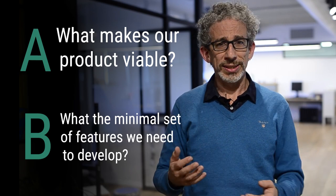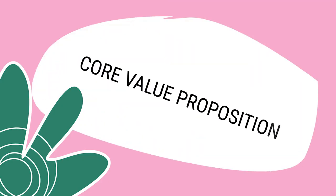Step one: core value proposition. To answer the question of what makes our product viable, we need to agree on the core value proposition of the product. We must agree on the pain we are solving and our main target audience — the people that feel this pain and would be willing to pay for that solution. The more focused and narrow we can get on that, the easier our task will be.